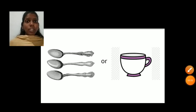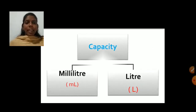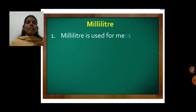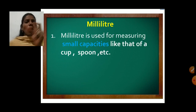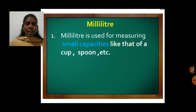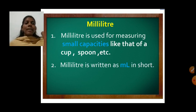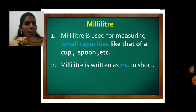Usually capacity is measured by milliliter and liter. Milliliter is used for measuring small capacities, like that of a cup or spoon. It is written as small m and capital L — it is not small l, it is capital L.